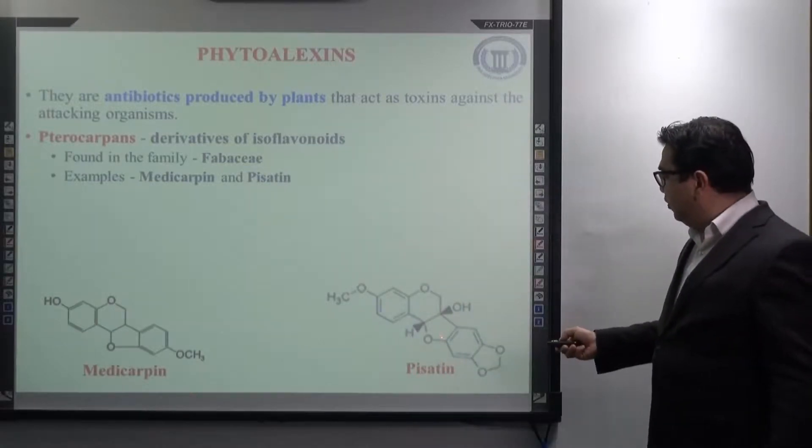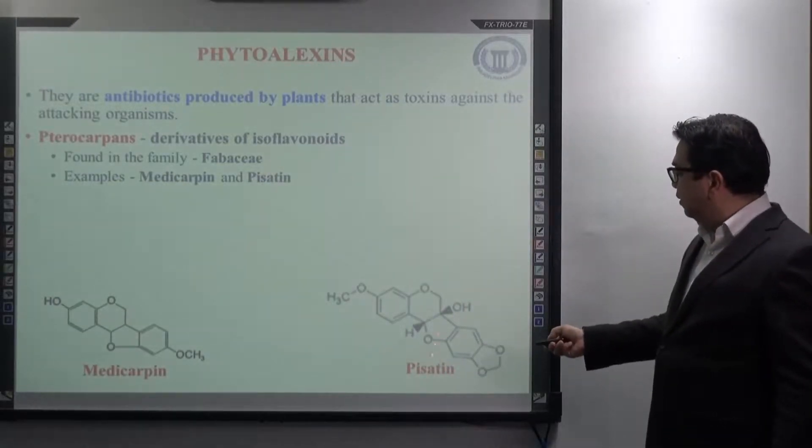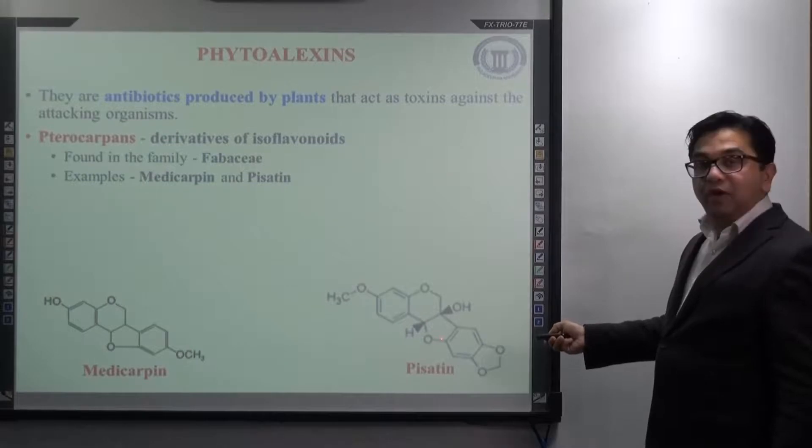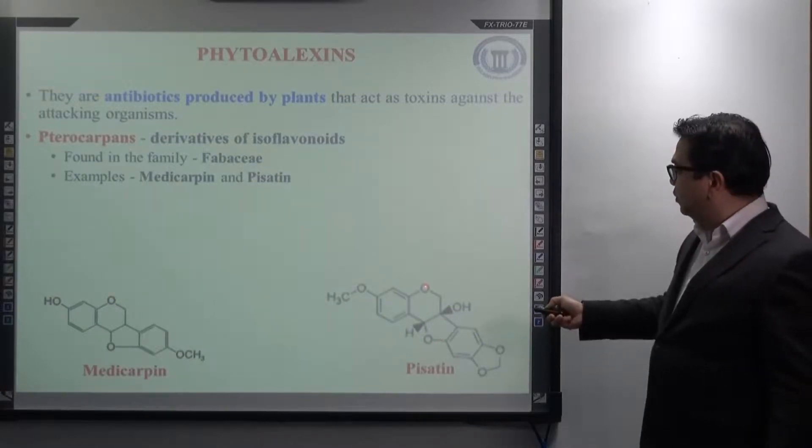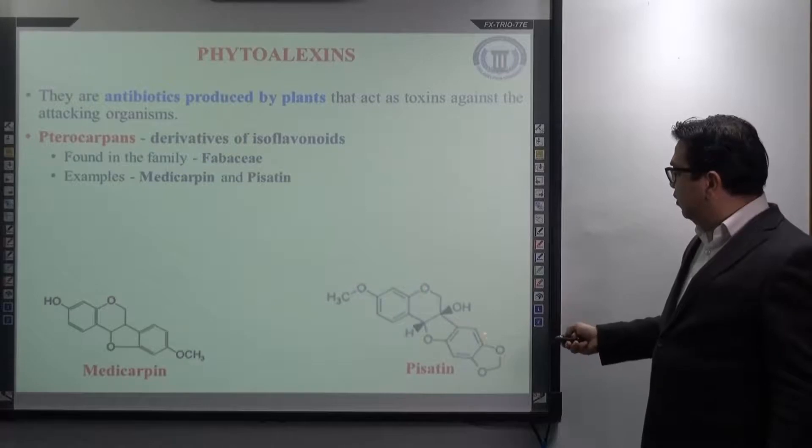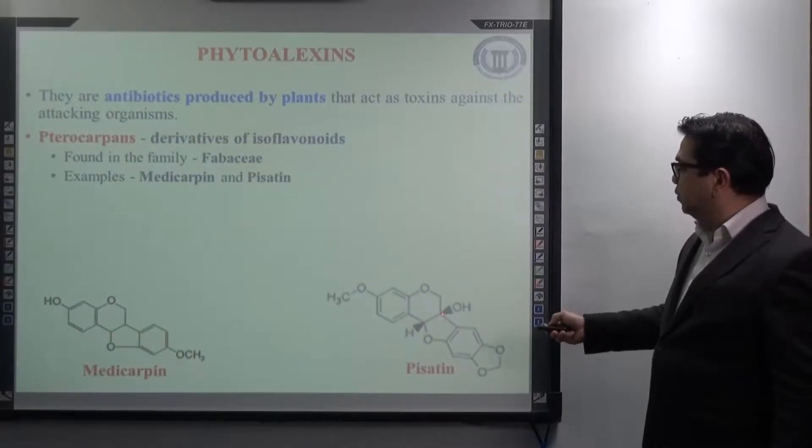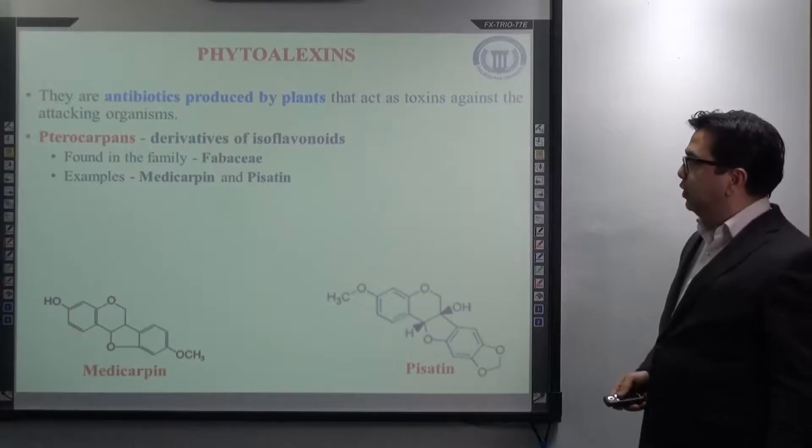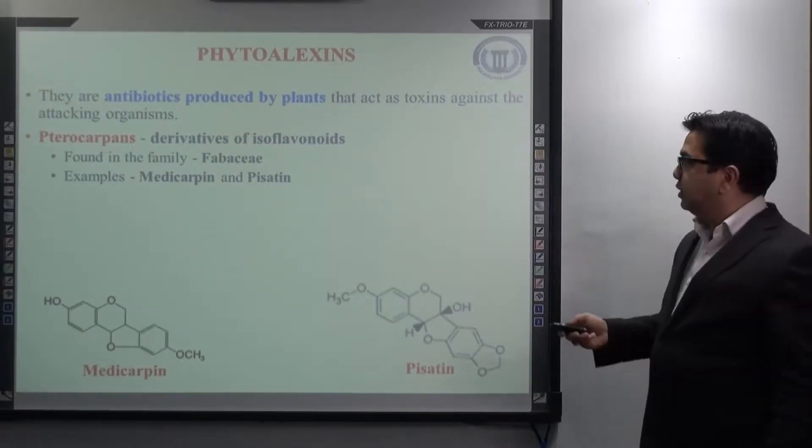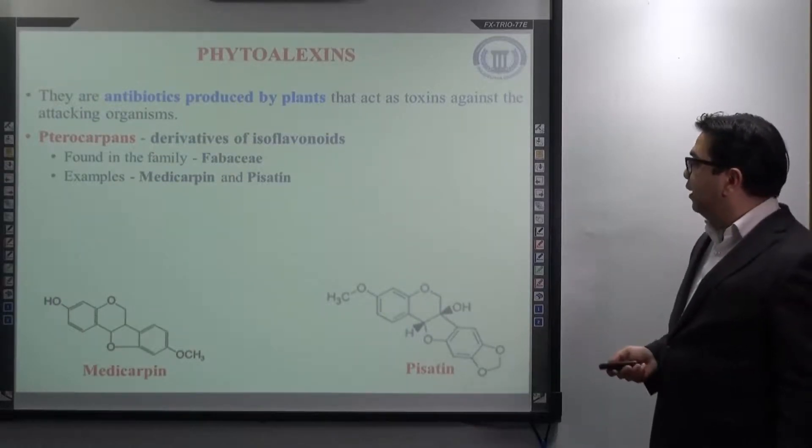Similarly, here also, if you remove this bond from here, this is also an example of isoflavonoid, where if you start numbering from here, one, two, three, the phenyl ring B is attached to the third position of ring C. Two of the most important examples are medicarpin and pisatin.